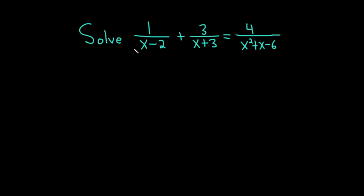Hello, in this video we're going to solve this rational equation. We have 1 over x minus 2 plus 3 over x plus 3 equals 4 over x squared plus x minus 6.